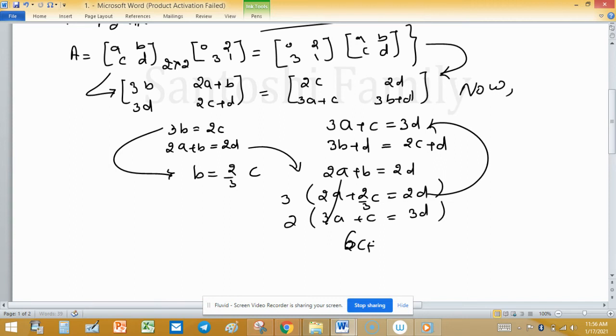6c + 2c = 6d + 6d. It means 8c = 12d, or c = (12/8)d = (3/2)d.